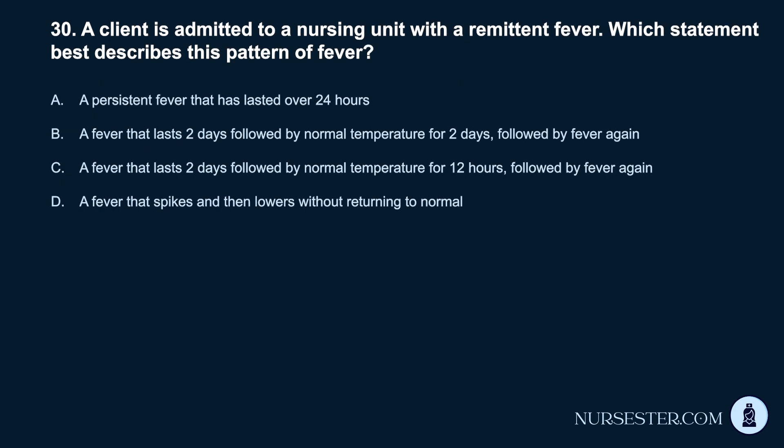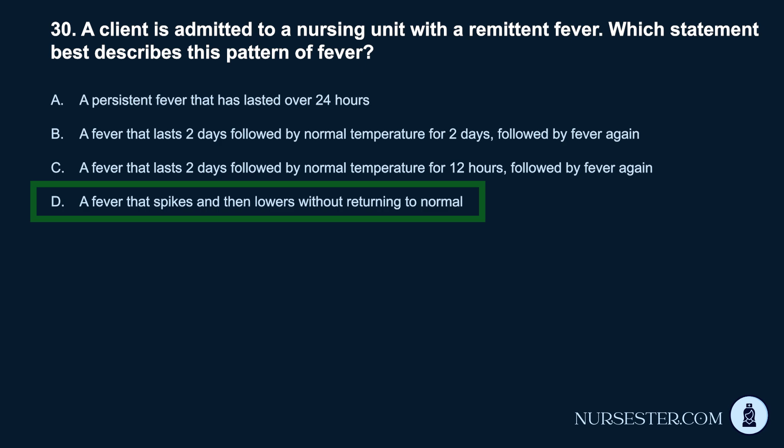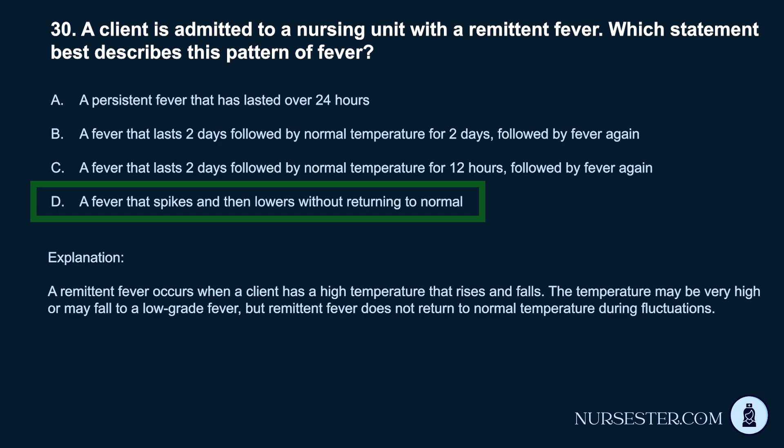Question 30. A client is admitted with a remittent fever. Which statement best describes this pattern of fever? a. A persistent fever lasting over 24 hours. b. A fever lasting 2 days followed by normal temperature for 2 days, then fever again. c. A fever lasting 2 days followed by normal temperature for 12 hours, then fever again. d. A fever that spikes and then lowers without returning to normal. A remittent fever occurs when a client has a high temperature that rises and falls. The temperature may be very high or fall to a low-grade fever, but a remittent fever does not return to normal temperature during fluctuations.